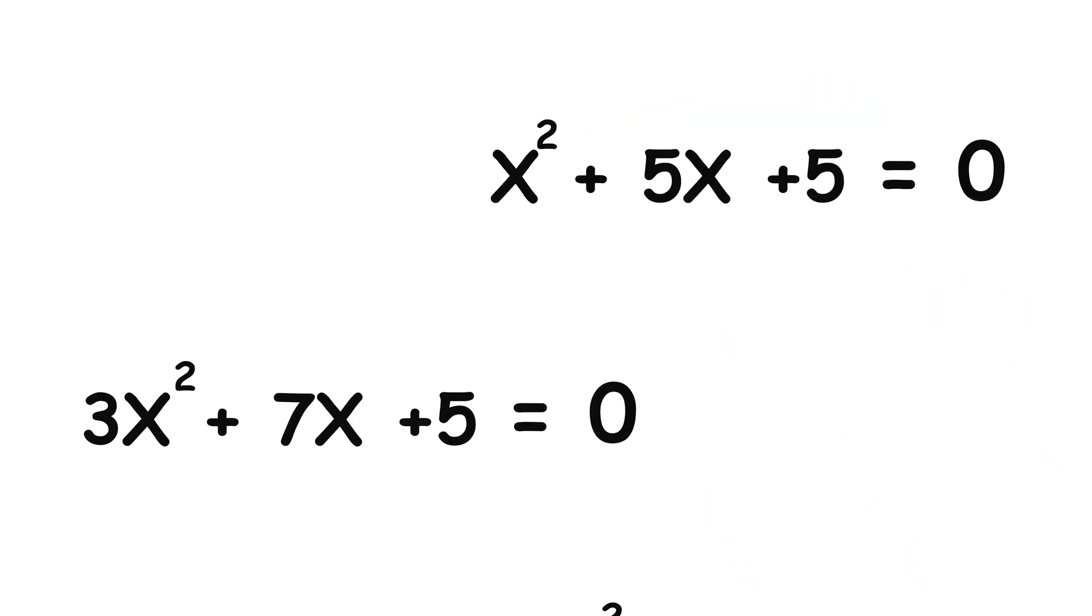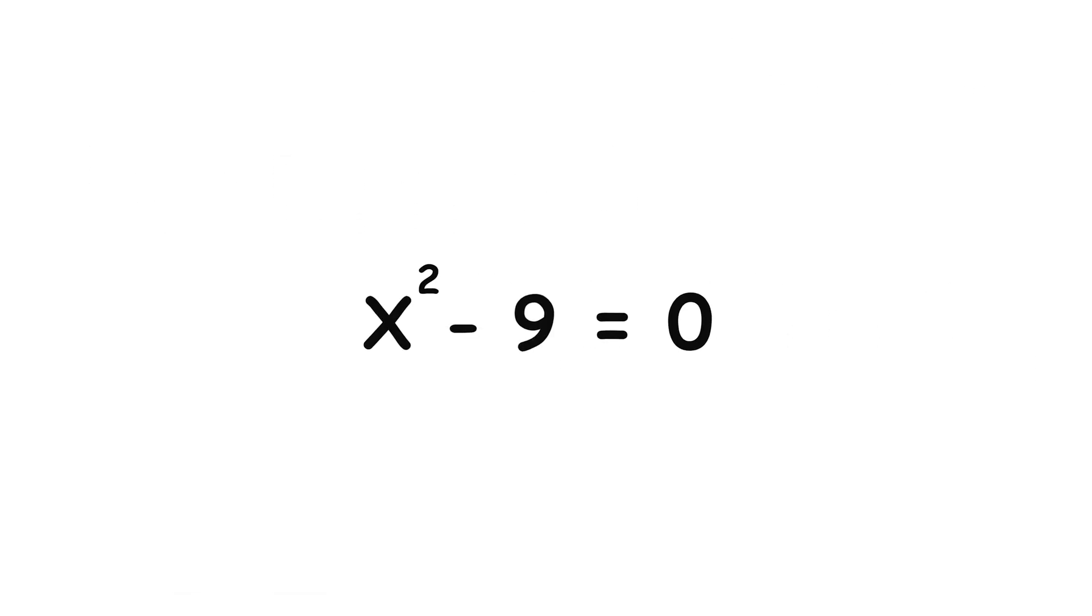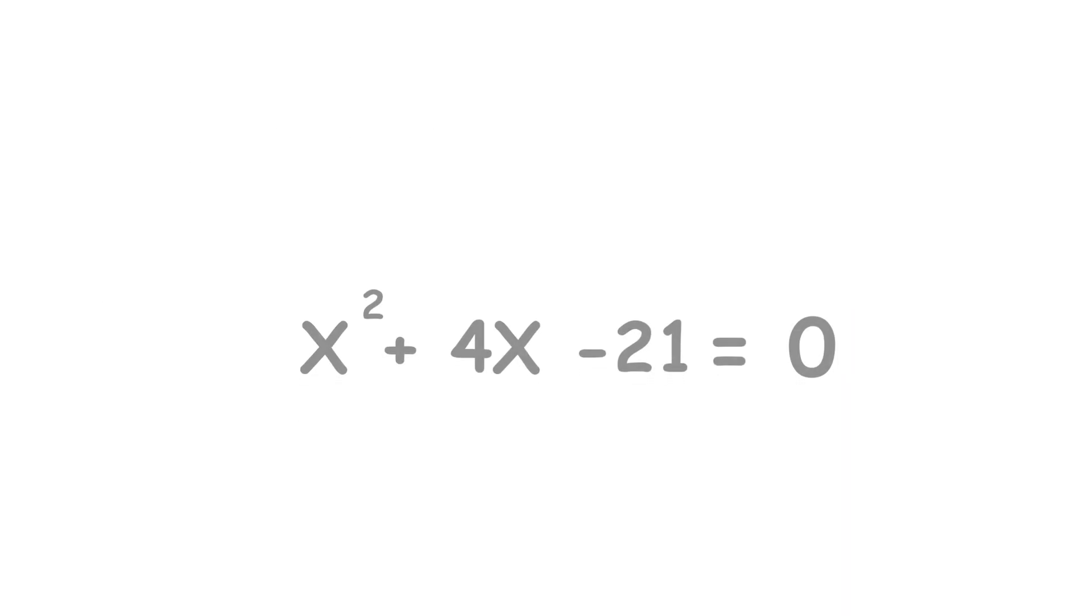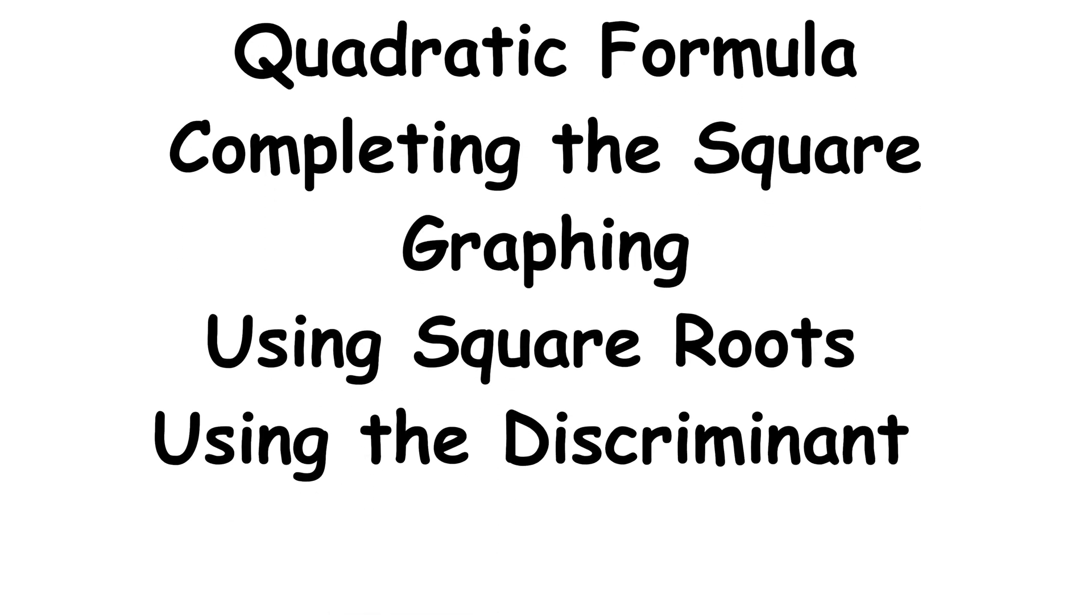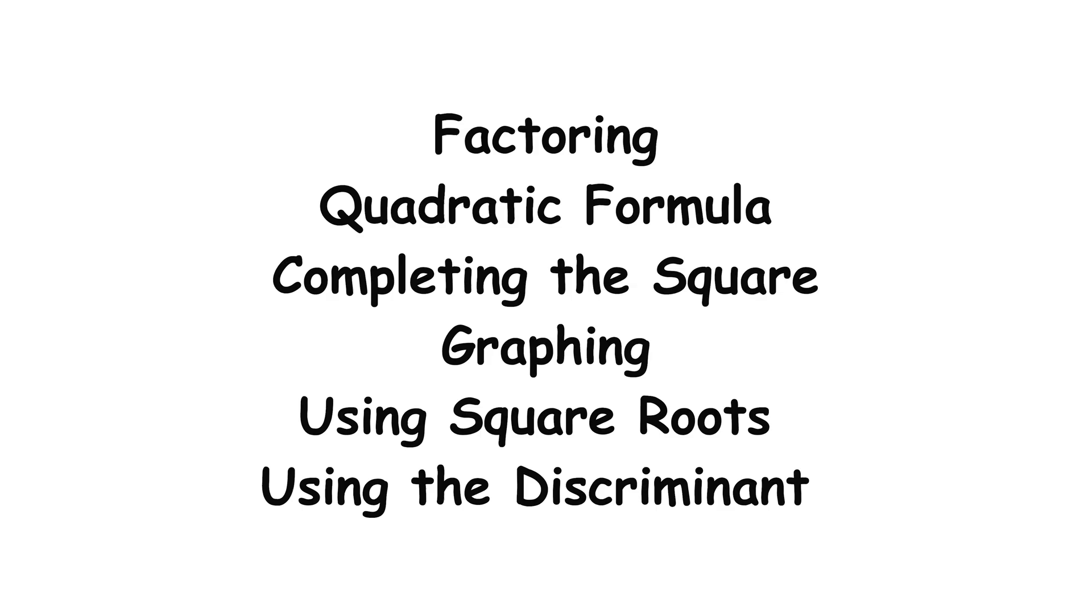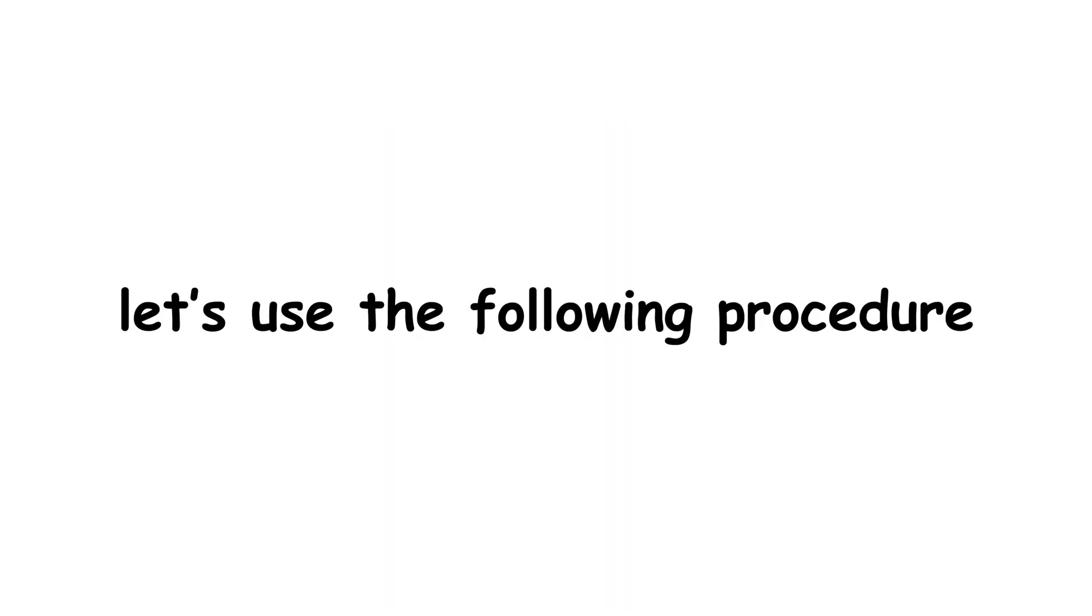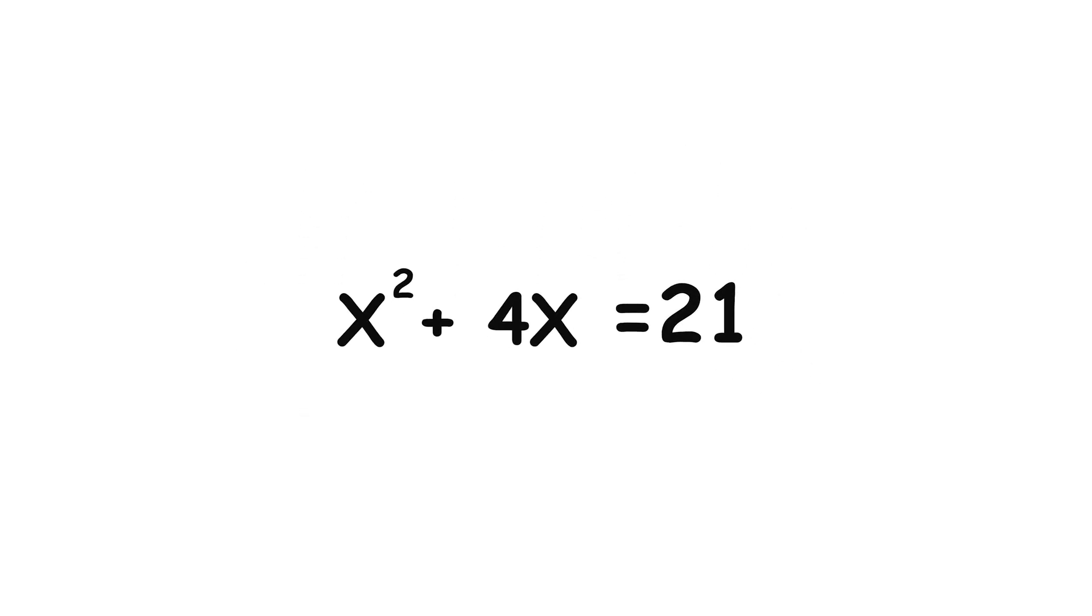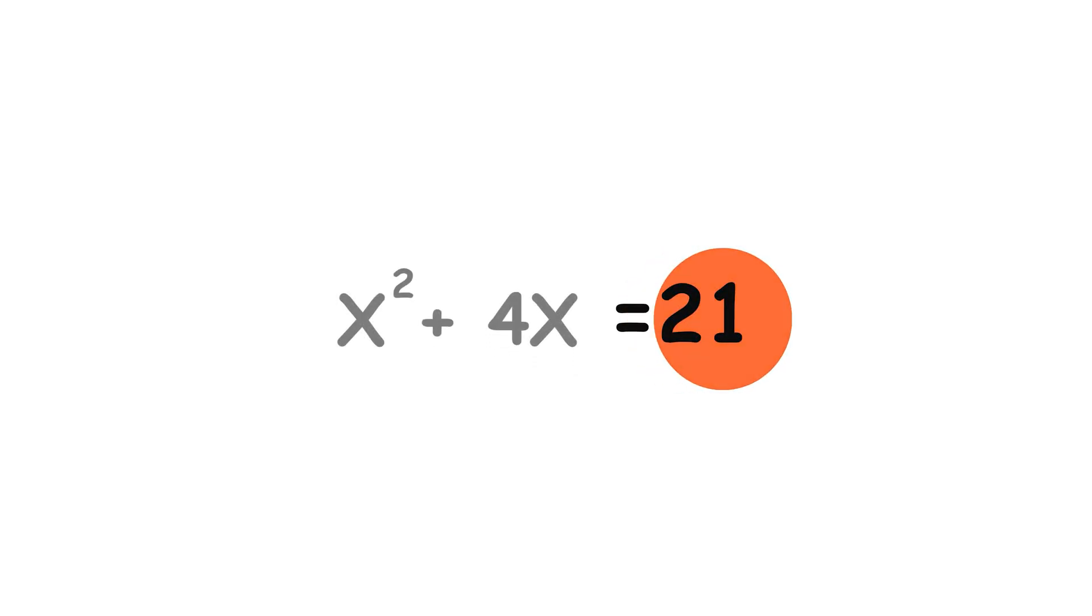Unfortunately, not all quadratic equations can be as nice as the one we just solved. Let's look at a more complicated example: x squared plus 4x minus 21 equals 0. There are a variety of ways we can proceed from here. And if you've learned about quadratic equations before, you may know some of them. But right now, let's use the following procedure. Add 21 to both sides, giving us x squared plus 4x equals 21. With this step, we've isolated the constant term on the right-hand side.